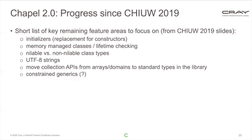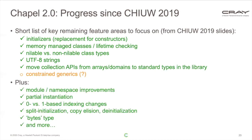Last year at CHU 2019, I presented a short list of remaining key features to focus on for Chapel 2.0. Happily, in the past year we've made great progress on all of those except Constrained Generics, which is still a work in progress. We're cautiously optimistic this won't be a breaking change and won't hold up Chapel 2.0. In addition to those listed features, we've also done a number of other improvements like the zero versus one-based indexing change. There's been a huge amount of progress — many more small things in the release notes.